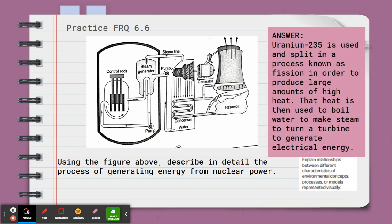All right, taking a look at our answer. So our question was, using the figure above, describe in detail our process of generating energy from our nuclear power. So we know that uranium-235 is going to be the fuel that we will use. We know it is split in a process known as fission. This process produces large amounts of heat. That heat is then used to boil water to make steam. That steam turns a turbine. That turbine generates electricity.